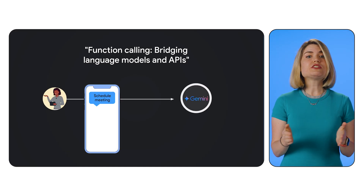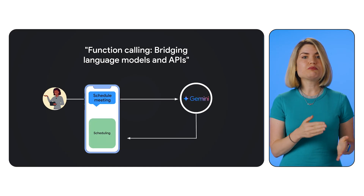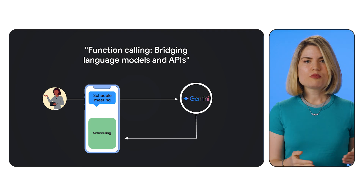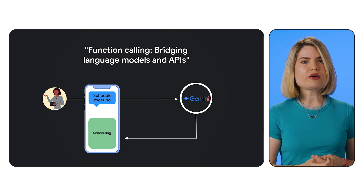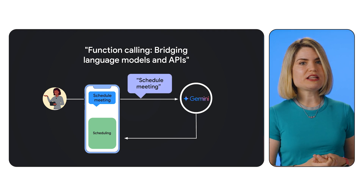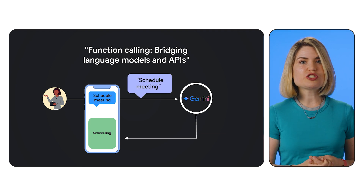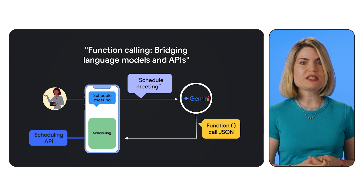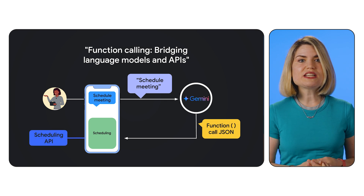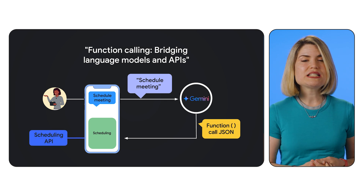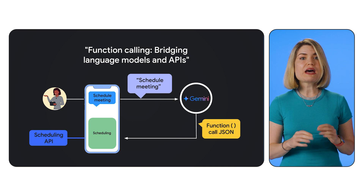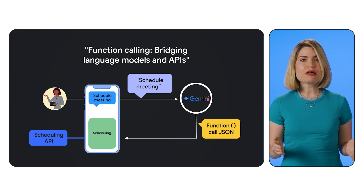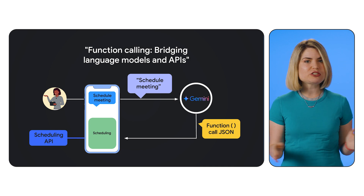Let's take a look at an example. Let's say you want to build a chatbot that can book appointments. With function calling, Gemini can understand a user's request to schedule a meeting and generate the JSON necessary to call your scheduling API, providing it with the time, date, and participant details. This makes building powerful dynamic applications much easier.